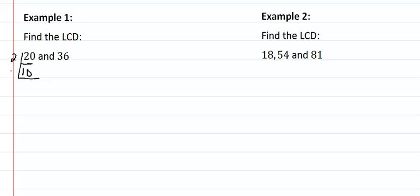10 is divisible by 2 and that would leave us with 5. So the prime factorization for 20 is 2 squared times 5.